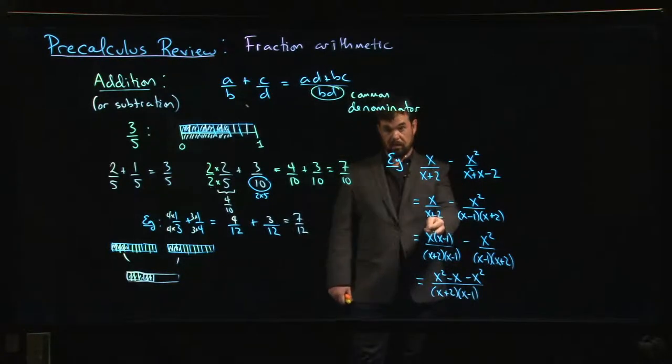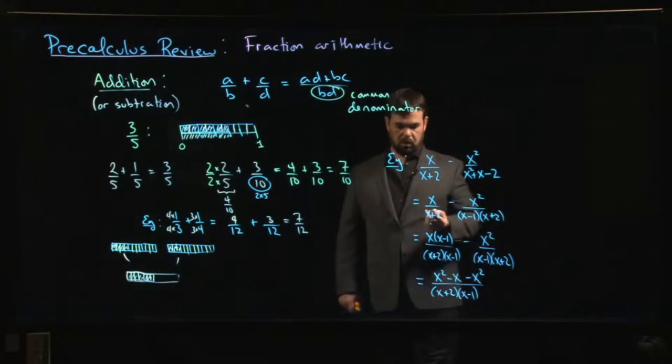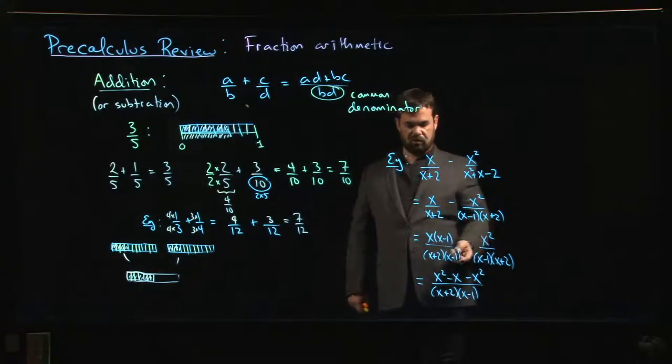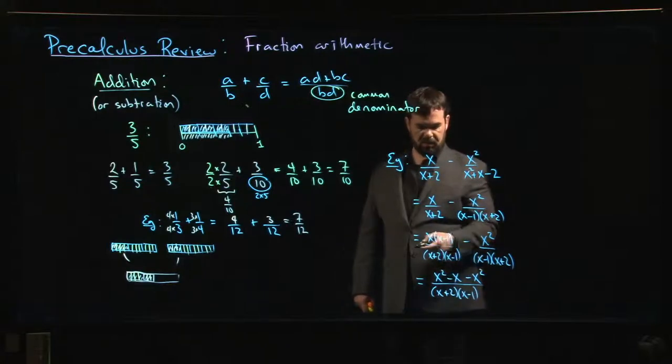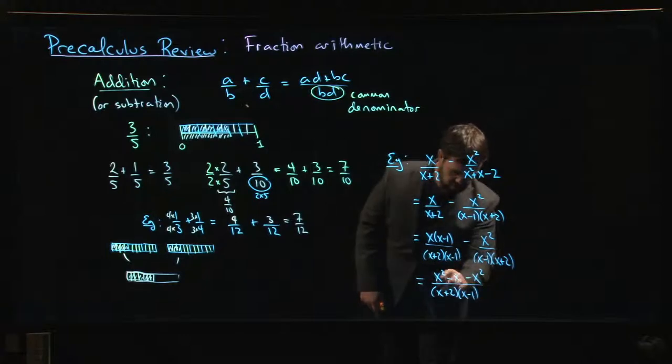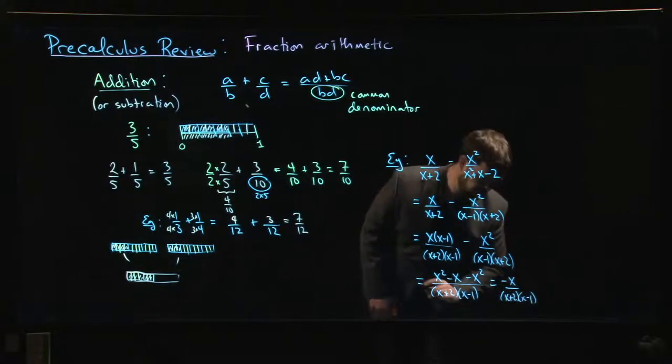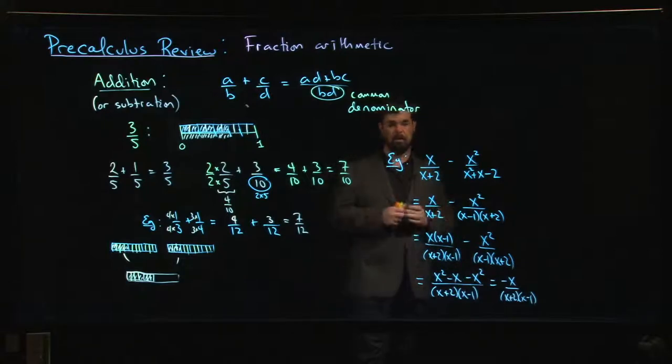You can leave that bottom factored or you can multiply it back out if you want. Chances are if you're doing a calculus problem, you're going to leave that bottom factored because you probably want those factors. They're going to tell you about things like vertical asymptotes if you were trying to graph this. They might be helping you solve an inequality. The last thing you might choose to do is notice that x squared minus x squared, this simplifies. They cancel. Anything minus itself is zero, so I just have minus x, x over x plus 2 times x minus 1. And I'm done.